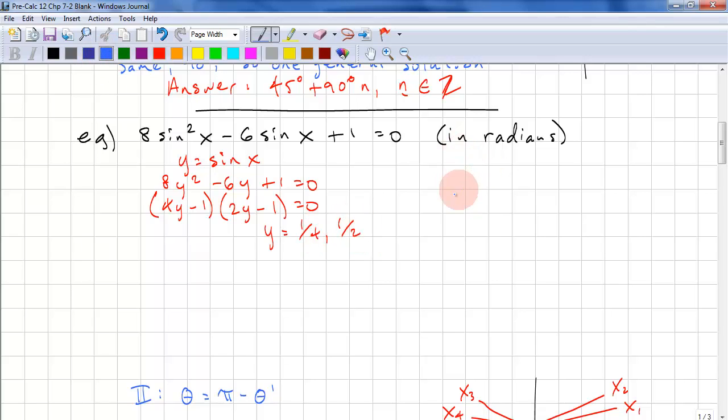So we have y equals 1 quarter and 1 half. And the note here is, make the equation look simpler with substitution. And now we can substitute back. So we'll need to do this twice, sine x equals 1 quarter, sine x equals 1 half.